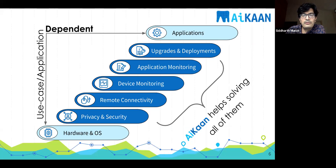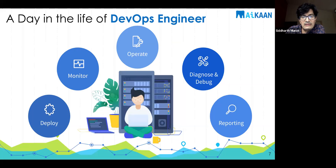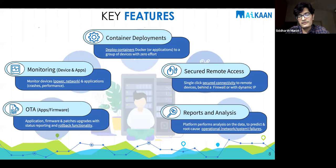ICANN makes it super easy to deploy applications from the cloud to the edge after choosing the right hardware. For a DevOps engineer, ICANN helps with daily deployments, monitoring existing sites, doing configuration changes, restarting devices when things aren't working, diagnosing and debugging network problems, and creating reports — for example, out of 500 sites, 80 are in good health and 20 are not. ICANN enables over-the-air upgrades, application monitoring, Docker and container deployments, remote access, and reports and analysis.